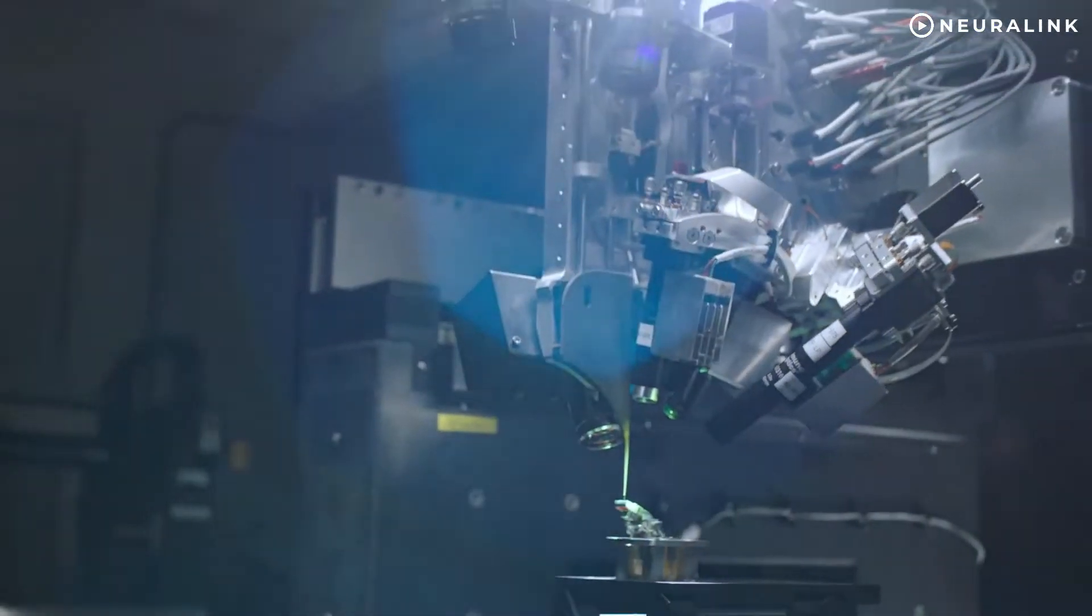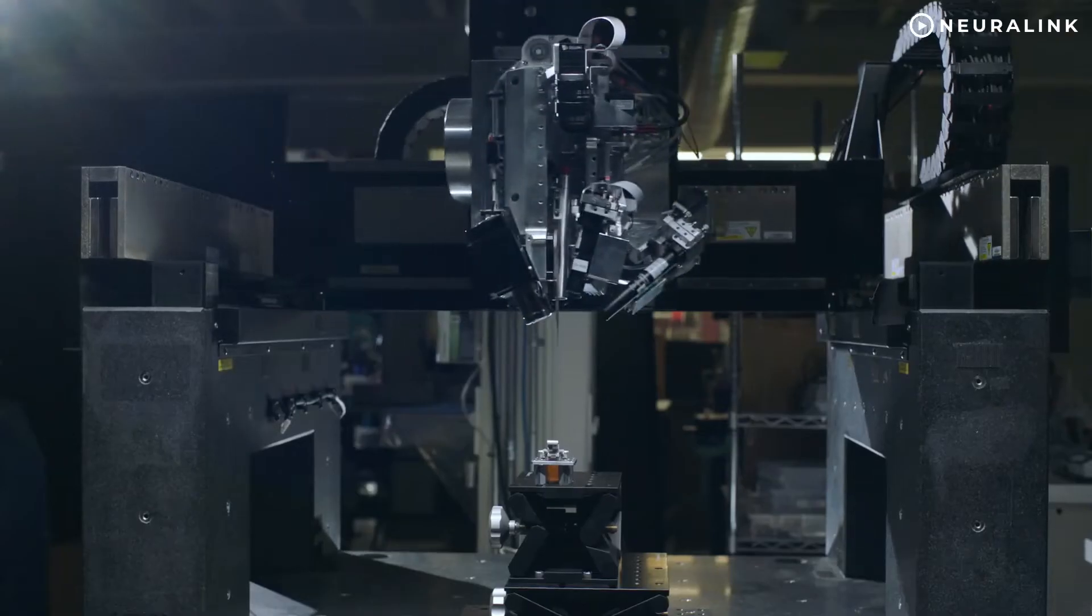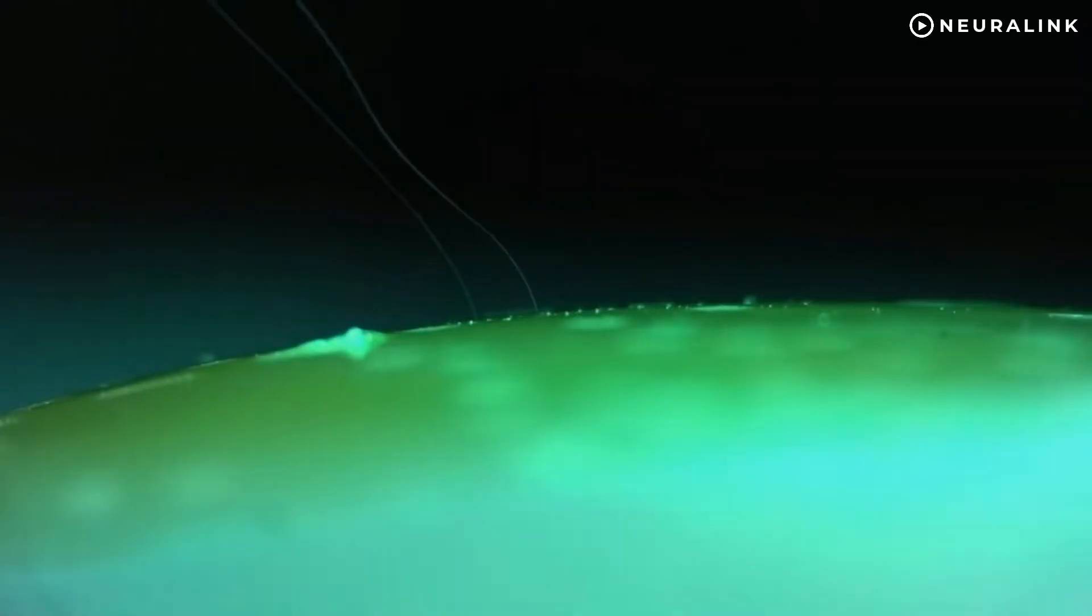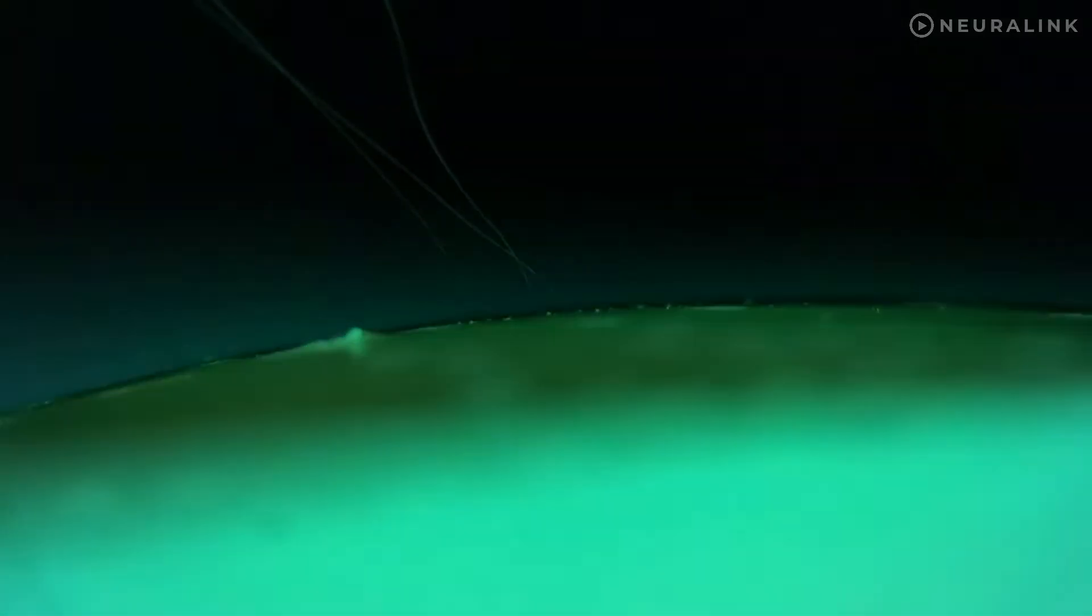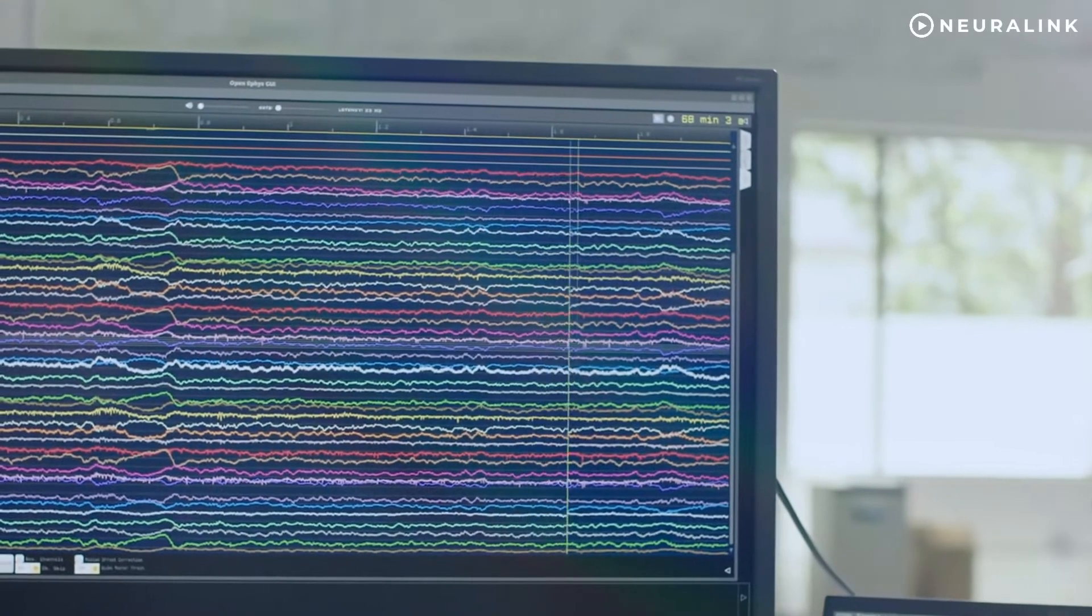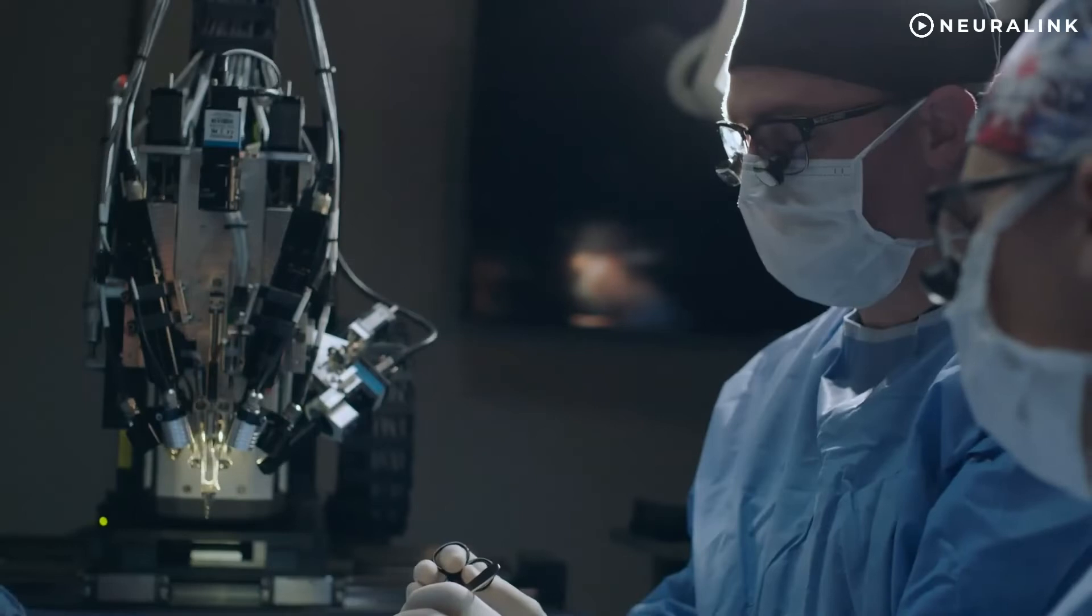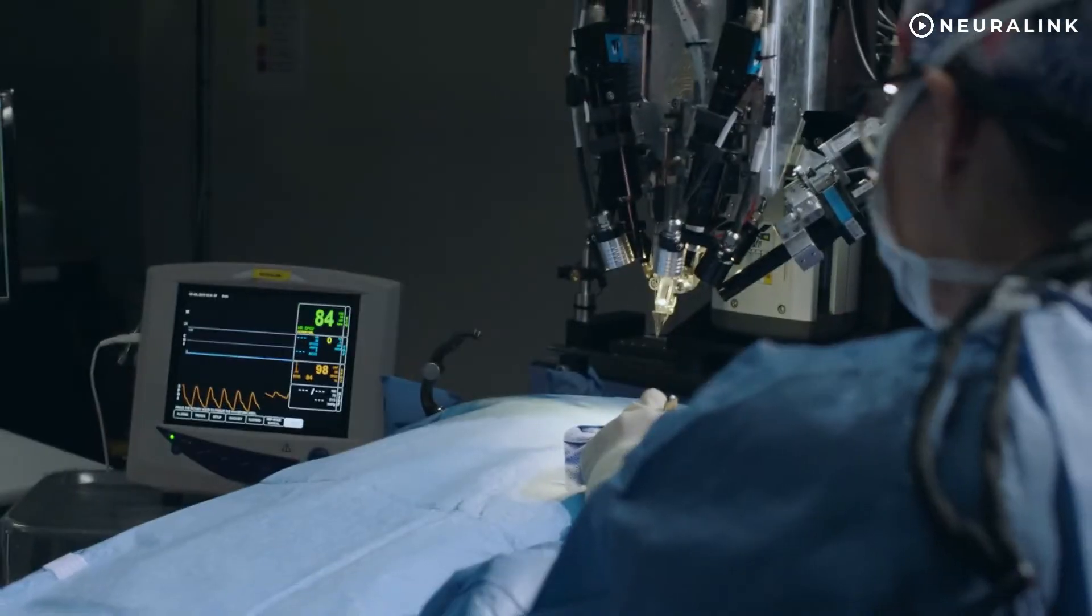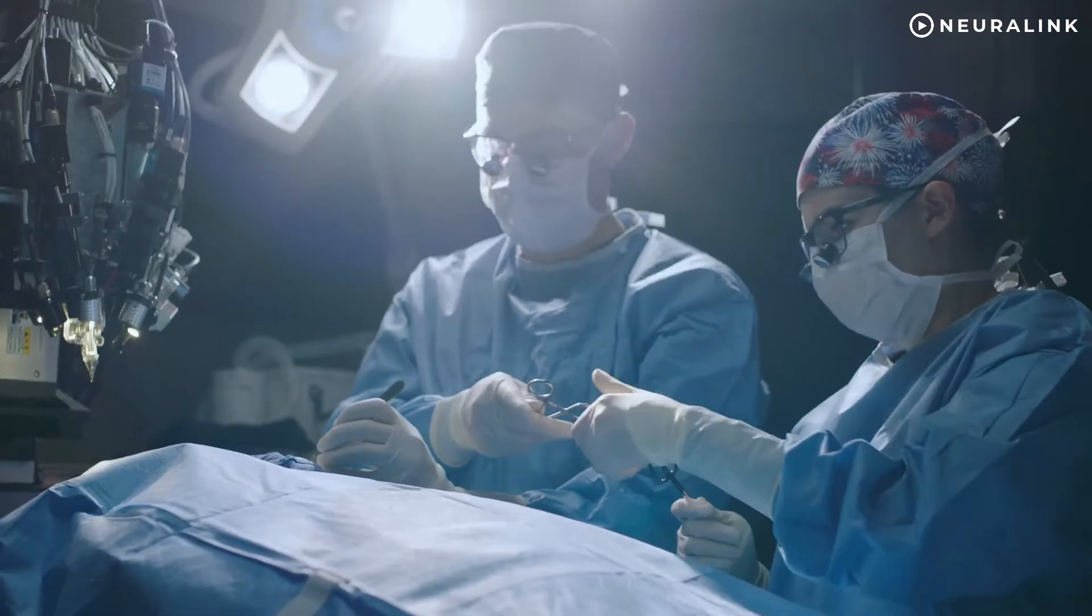In 2017, Neuralink announced that it was working on a sewing machine-like device capable of implanting fragile threads of 4 to 6 micrometers in width into the brain, and demonstrated a system that reads information from a laboratory rat through 1,500 electrodes. The company had anticipated starting experiments with humans in 2020, but has since moved that projection to 2021.